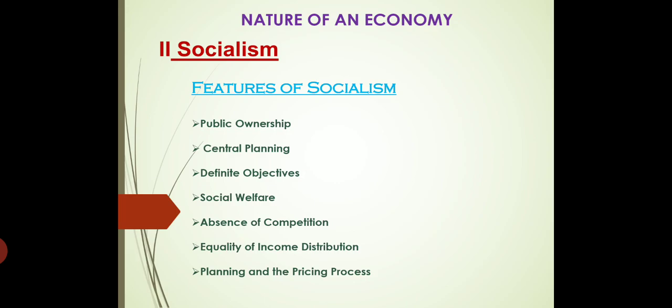Next is absence of competition. If things are being governed by the government only, then there will be no competition. Then, equality of income distribution — this means that everyone in the economy will be given equal income. The richer will not become richer and the poorer will not become poorer. Money will be taken from the rich and given in the form of welfare activities to the poor so that there will be an equal distribution of income at all levels.